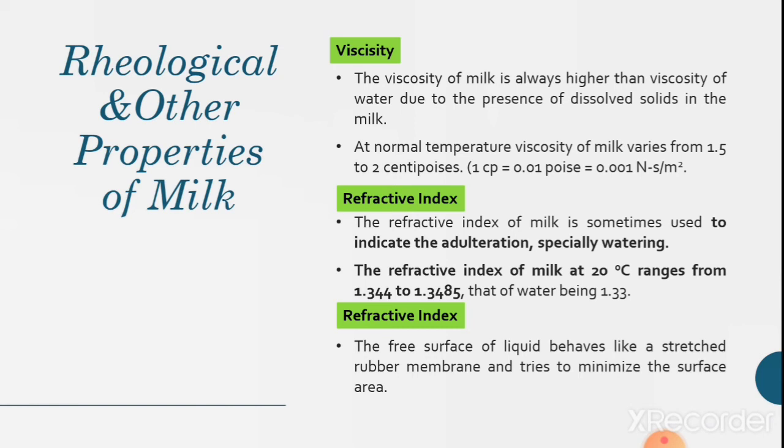Refractive index. The refractive index of milk is sometimes used to indicate the adulteration, especially watering. From this topic we can understand that the adulteration of milk with water can be identified using lactometer and by knowing the refractive index of water. The refractive index of milk at 20 degrees Celsius ranges from 1.344 to 1.3485, that of water at same temperature being 1.33.